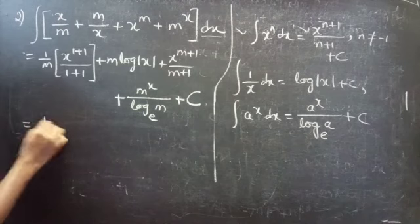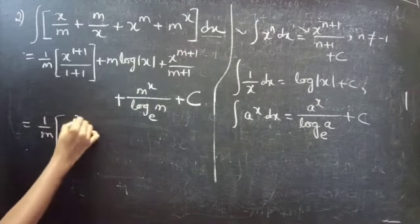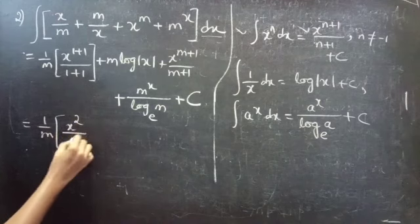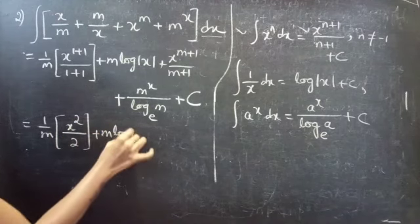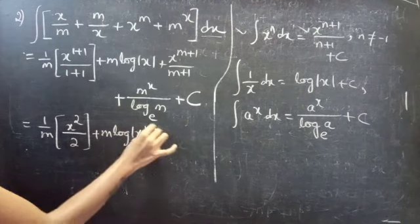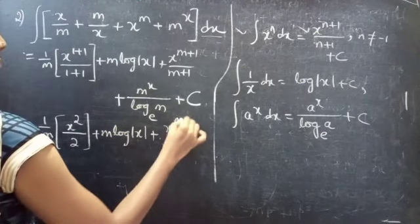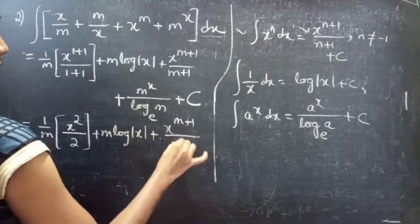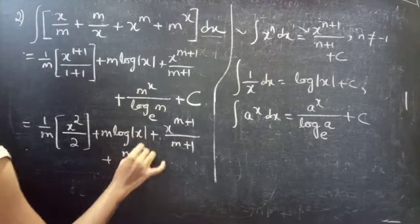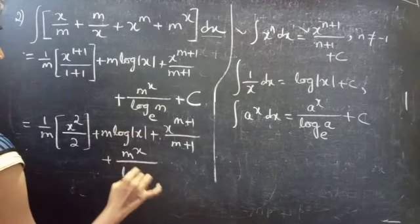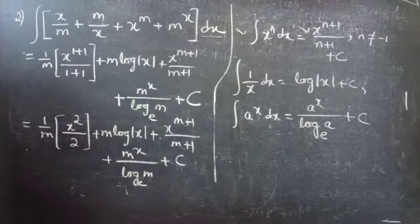Plus integral m^x dx: using the formula integral a^x dx equals a^x divided by log a to the base e, you get m^x divided by log m to the base e. Finally, add the constant of integration c.